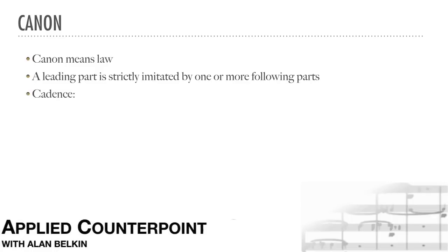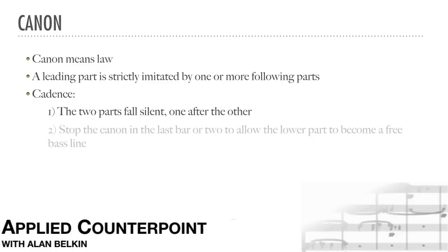Strictly speaking, it is possible to simply bring the leading part to a melodic cadence that's then imitated by the follower. Here the ending simply consists of the two parts falling silent one after the other. But more often the composer wants a cadence that's harmonically conclusive, and that means stopping the canon in the last bar or two to allow the lower part to become a free bass line.